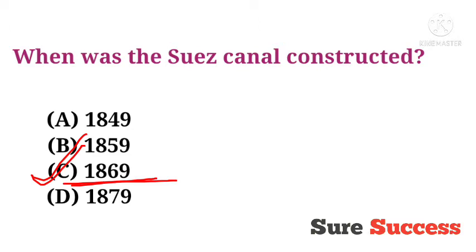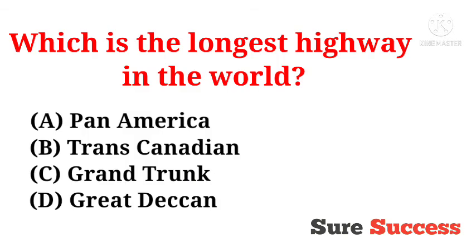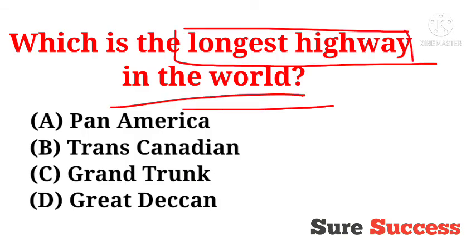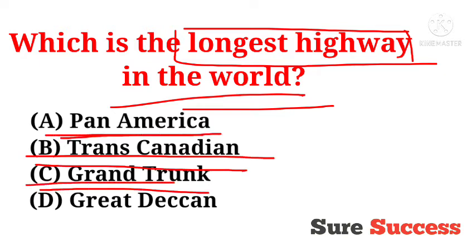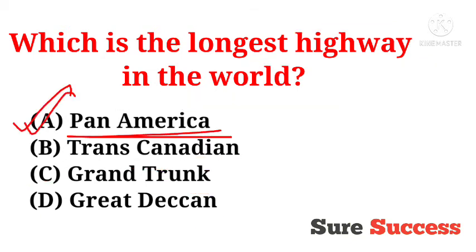The Suez Canal was constructed in 1869. Which is the longest highway in the world? Options are Pan America, Trans-Canadian, Grand Trunk, and Great Jacken. The correct answer is Pan America — it is the longest highway in the world.